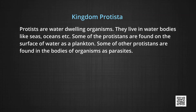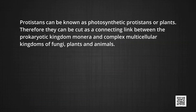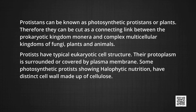Second kingdom: Protista. Protista are water-dwelling organisms living in water bodies like seas and oceans. Some Protists are found on the surface of water as plankton, while others are found in the bodies of organisms as parasites. Protista are single-celled, eukaryotic microorganisms and known as ancestors of multicellular eukaryotic organisms. They can be photosynthetic, and are considered a connecting link between prokaryotic Kingdom Monera and the complex multicellular kingdoms of fungi, plants and animals. Protists have typical eukaryotic cell structure; their protoplasm is surrounded by a plasma membrane, and some photosynthetic Protists have distinct cell walls made up of cellulose.